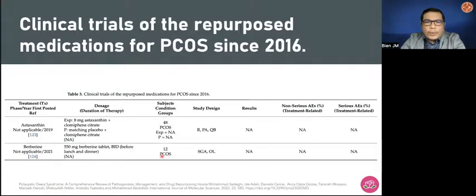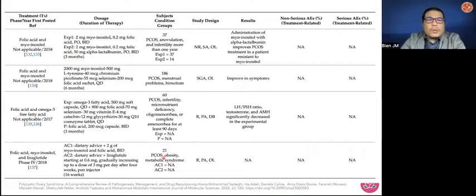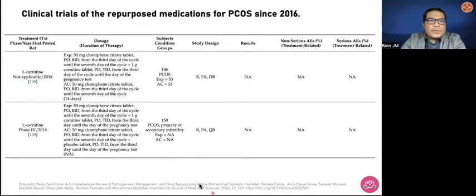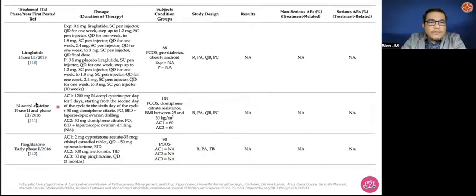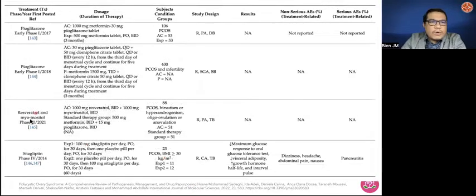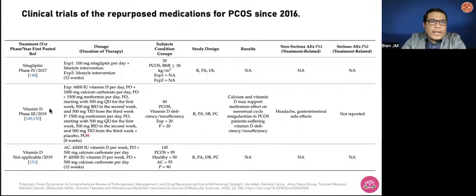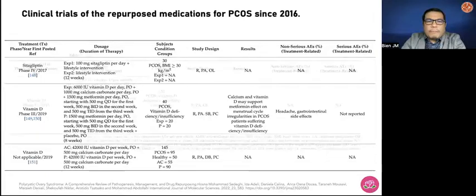A new publication in 2022 looked at repurposed medications for PCOS — these include astaxanthin and berberine, which are basically dietary supplements though robust data are not yet available. There's also polyunsaturated fatty acid use in patients with PCOS together with myo-inositol. There are also studies on L-carnitine for patients with PCOS, though results are not yet available, as well as use of N-acetylcysteine, studies for PCOS, and even resveratrol together with myo-inositol, and looking at the use of vitamin D in patients with PCOS.